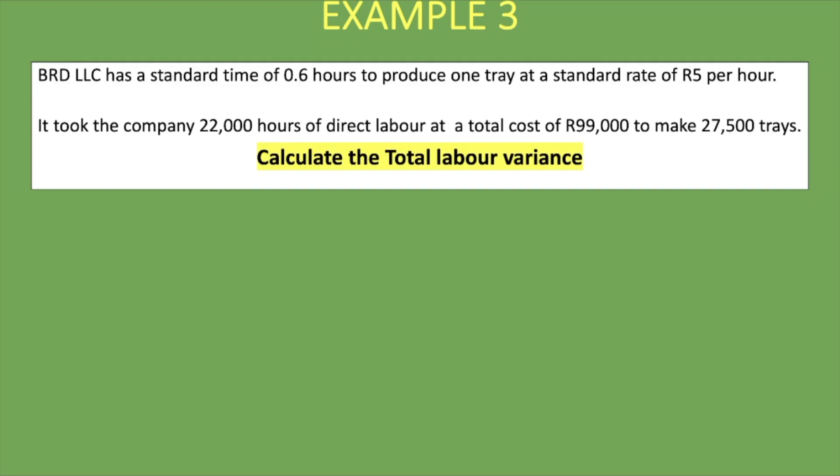For example three, pause the video and attempt the question on your own. BRD LLC has a standard time of 0.6 hours to produce one tray at a standard rate of 5 rand per hour. It took the company 22,000 hours of direct labor at a total cost of 99,000 rand to make 27,500 trays. Calculate the total labor variance.